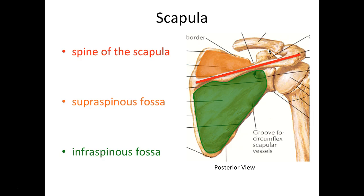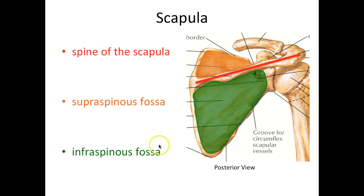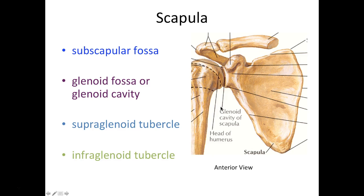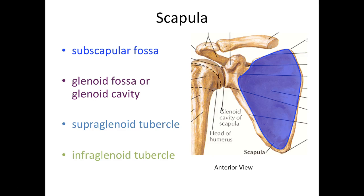Breaking down supraspinous fossa: supra means above, spinous refers to the spine of the scapula, and fossa means a shallow depression — so this is a shallow depression above the spine. Similarly, infraspinous fossa: infra meaning below, spinous meaning spine, fossa meaning a shallow depression below the spine. If you break down these words using your medical terminology, you should at least have an idea of where these structures are.